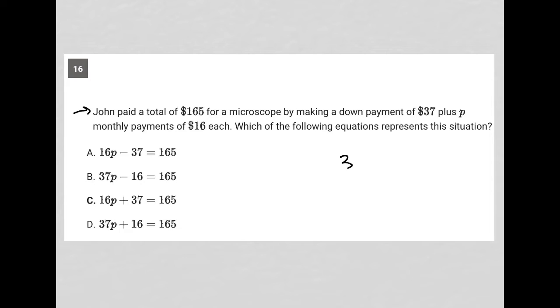Okay, so he's paying $37. In addition to that $37, he's going to pay 16 times P, however many months there are that he's paying this. And all of this should end up equaling $165.